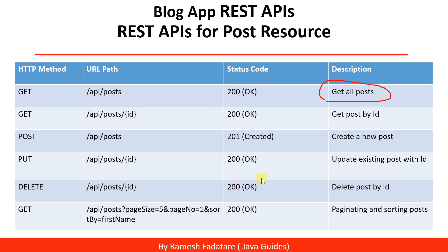This is a typical REST API design for the post resource. You can add a few more columns to this table, such as the request format, response format, and media type for each REST API. We are going to use JSON as the media type — we will send a JSON request and receive a JSON response for all these REST APIs.